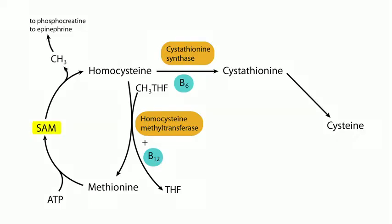Since we were discussing homocysteine, let's mention S-adenosyl methionine, or SAM. SAM is important as a methyl group donor — it transfers methyl units for the conversion of norepinephrine to epinephrine and for the synthesis of phosphocreatine. SAM is made from ATP and methionine. Regeneration of methionine is dependent on B12 and folate, so without those you can't make enough methionine, and without methionine you can't make SAM, impairing phosphocreatine and epinephrine synthesis.